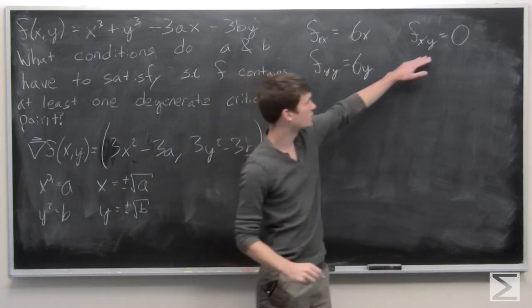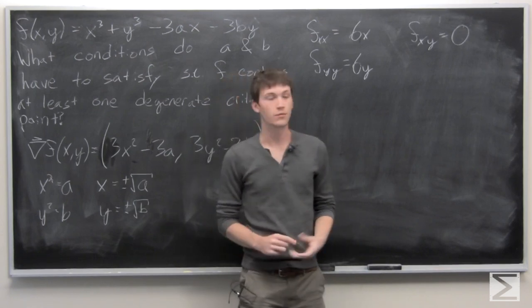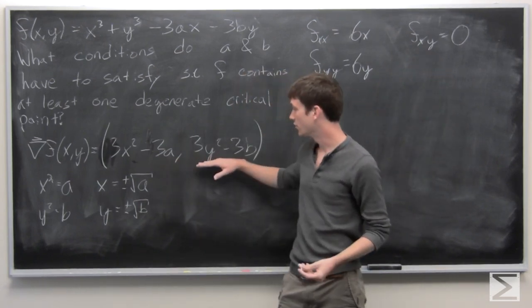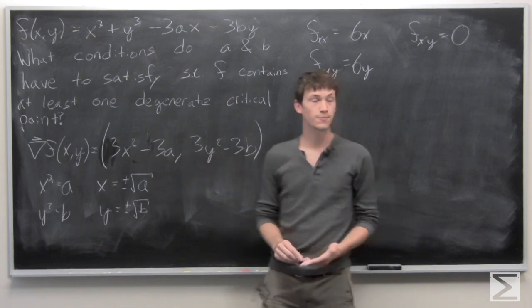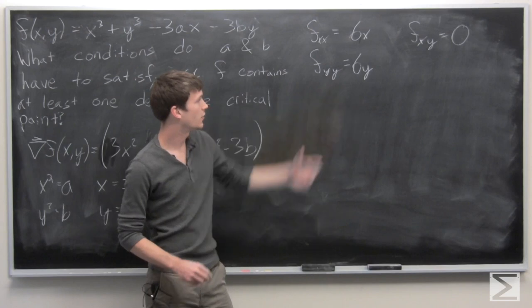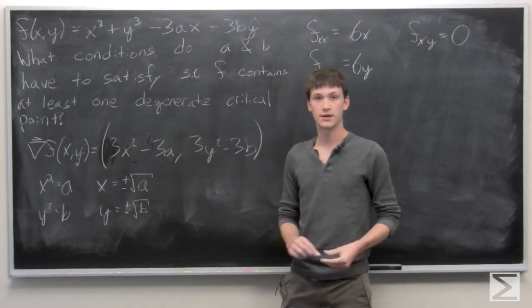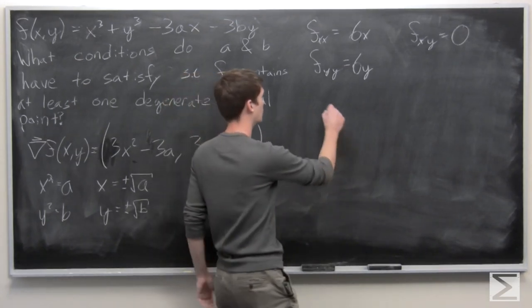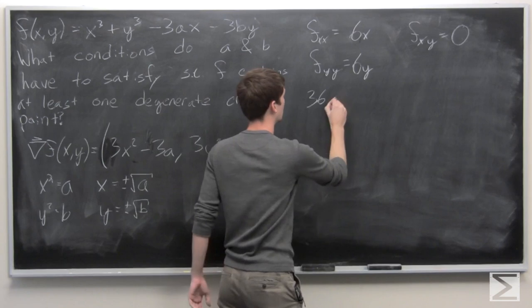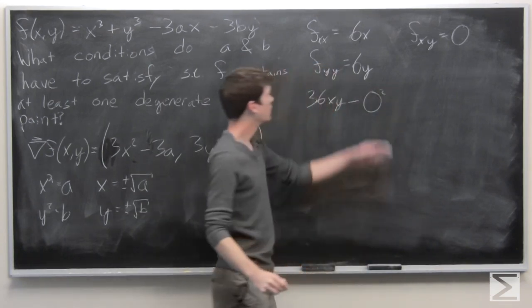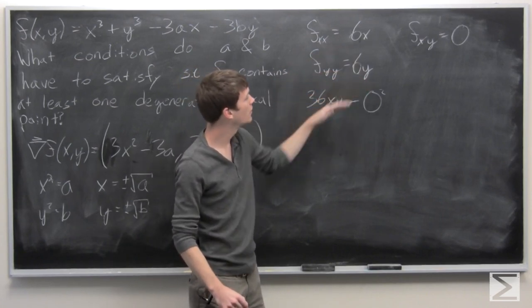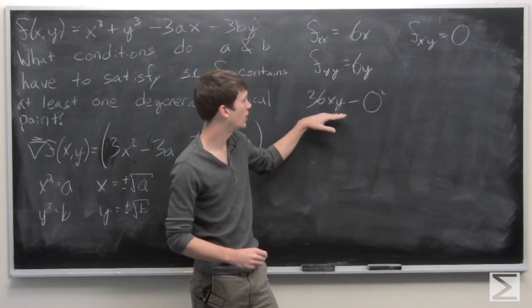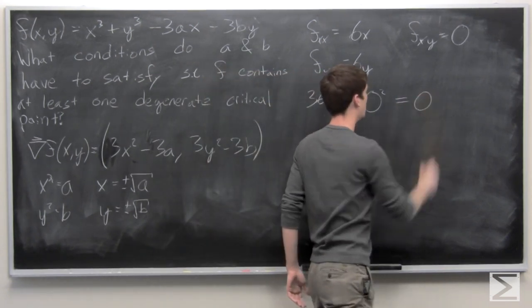The partial derivative of f sub x with respect to y is equal to 0, and similarly the partial derivative of f sub y with respect to x is also 0. The partial derivative of f sub y with respect to y is 6y. So we want the determinant of the Hessian matrix to be equal to 0, which we write as f sub xx times f sub yy minus f sub xy squared. That gives us 6 times 6, which is 36xy minus 0, and we want that to be equal to 0.